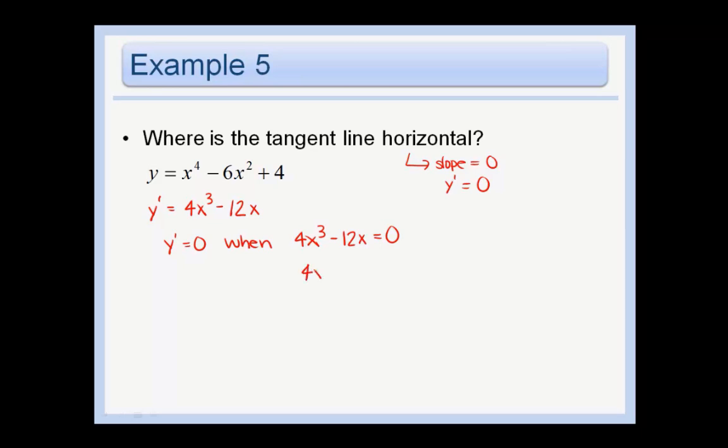Let's just pull out a 4x which is in common. So we get when x equals 0 or x squared equals 3. In other words x equals positive or negative root 3. We have horizontal tangent lines when x equals 0 or x equals plus or minus root 3.